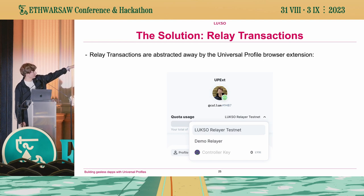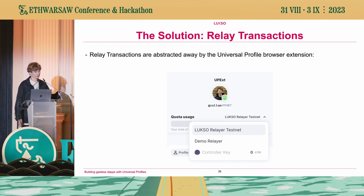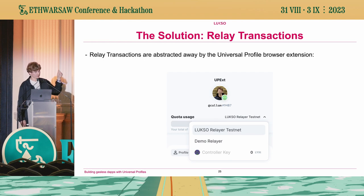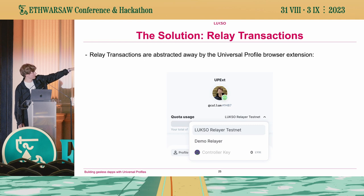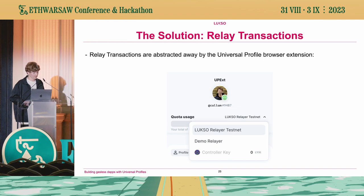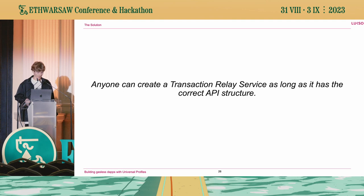Within the browser extension, there's a dropdown where you're able to select which transaction relay service you want to use. Anyone is able to run a transaction relay service — it's entirely open and permissionless. The user can choose which one they want to use. You can see the last option, the controller key, is disabled because the user has no tokens. So the user is still able to confirm and send a transaction even though they have no tokens available — because the relay services are doing that gas payment for them.